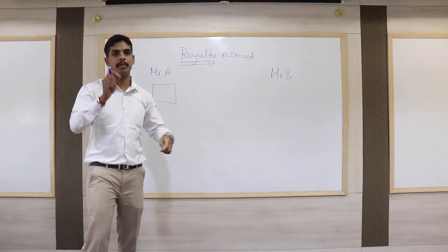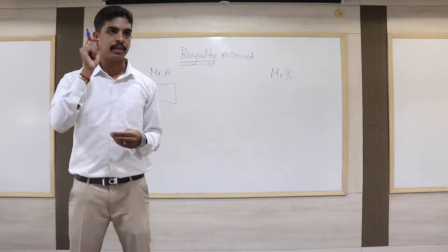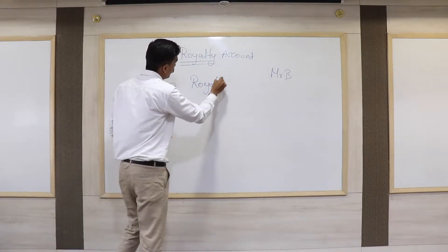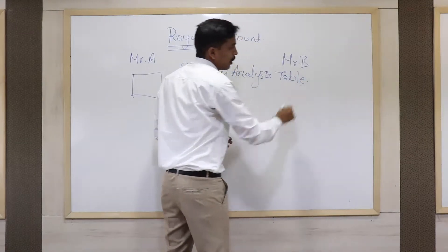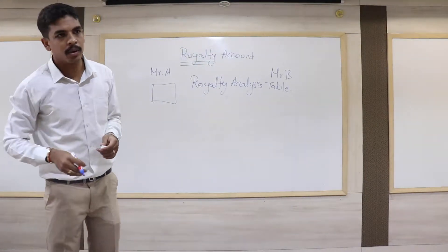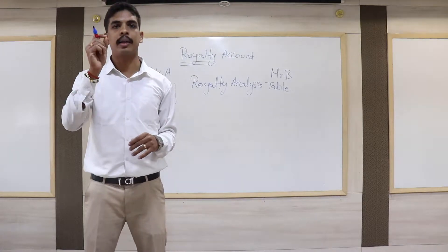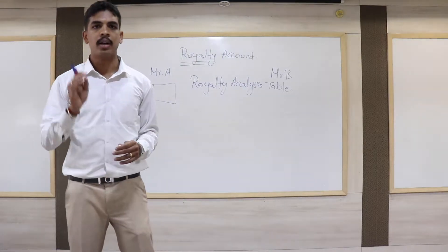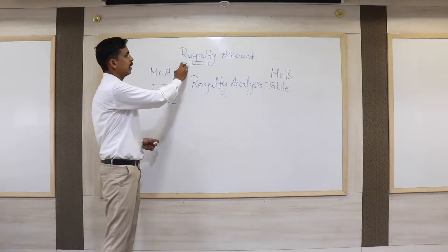From these examples we have understood the concept of royalty. When it comes to accounting for royalty, we need to prepare journal entries and ledger accounts. Before we start preparing the journal entries and ledger accounts, we need to prepare a royalty analysis table. This royalty analysis table will give us the values required to pass the journal entries and prepare the ledger accounts. Before preparing this table, we need to understand certain terminology related to royalty accounts.